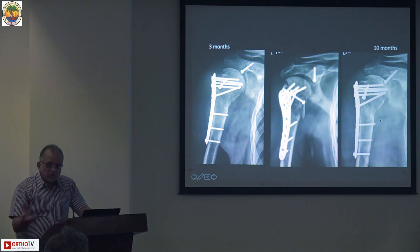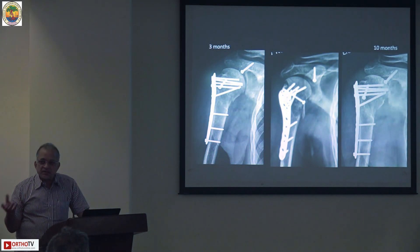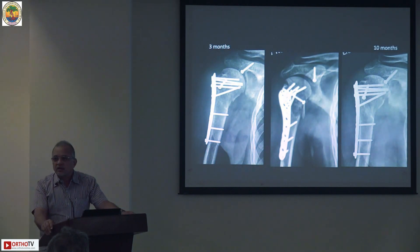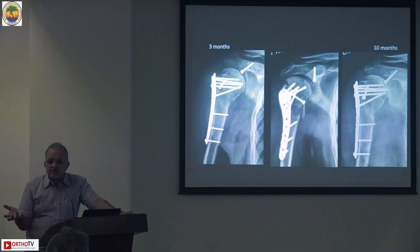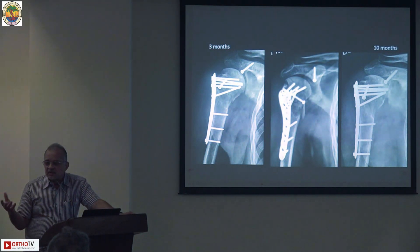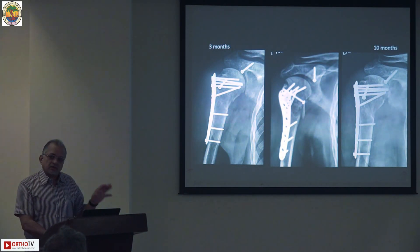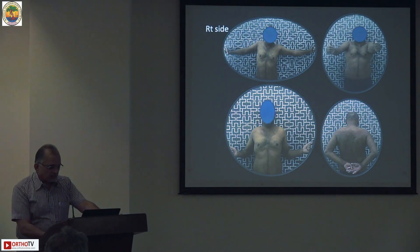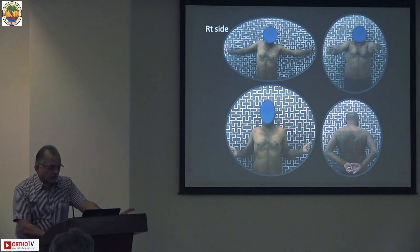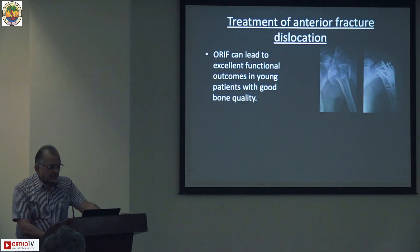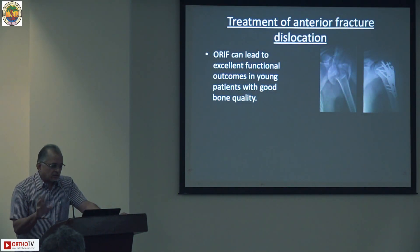At three months and at ten months, the fracture has healed and there is no avascular necrosis. Unlike the femoral head, avascular necrosis in the humeral head is usually evident at about eight to nine months or around one year. At ten months it is too early to predict whether AVN is present. The operated right side shows good function at the end.